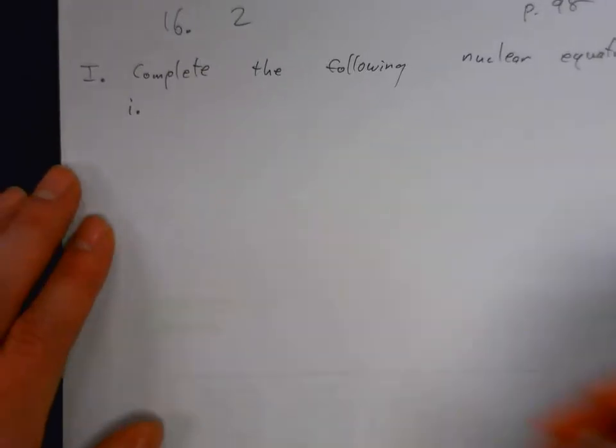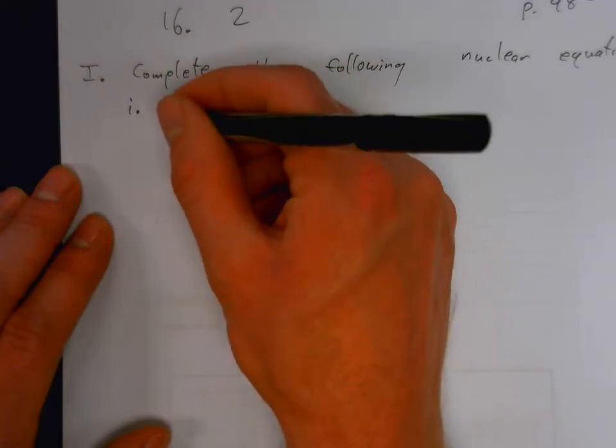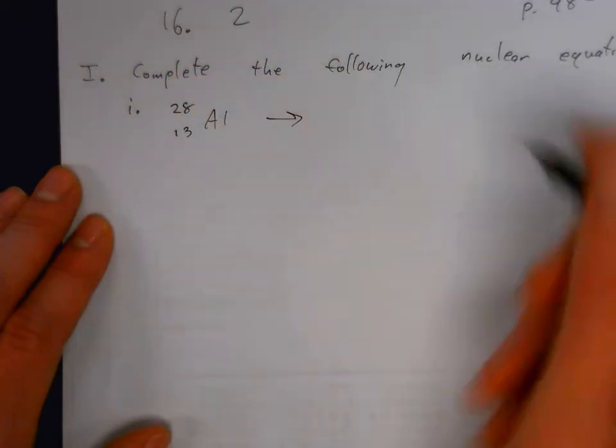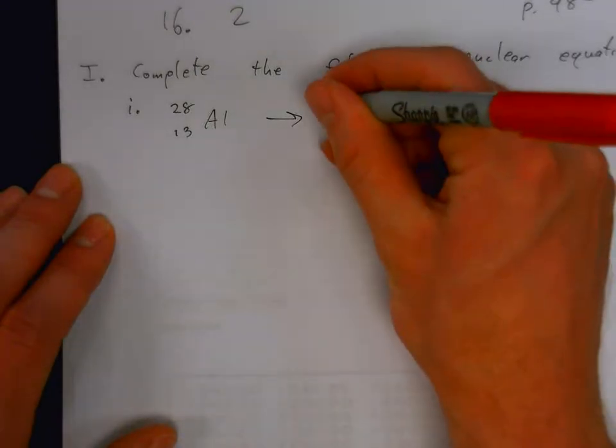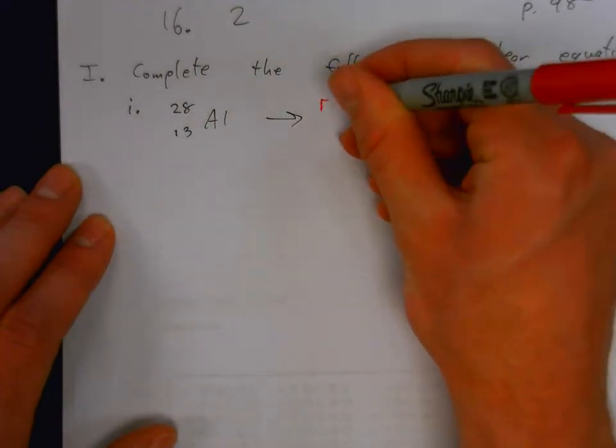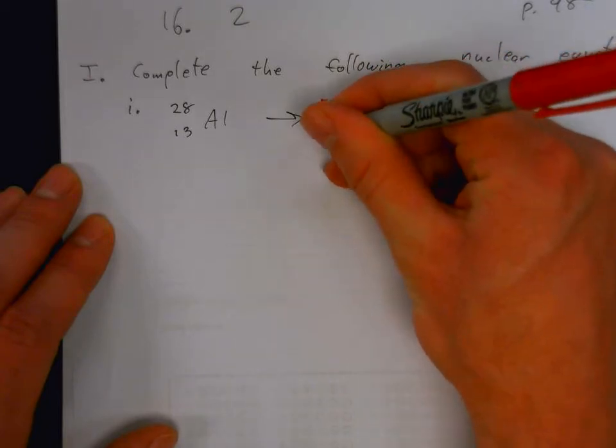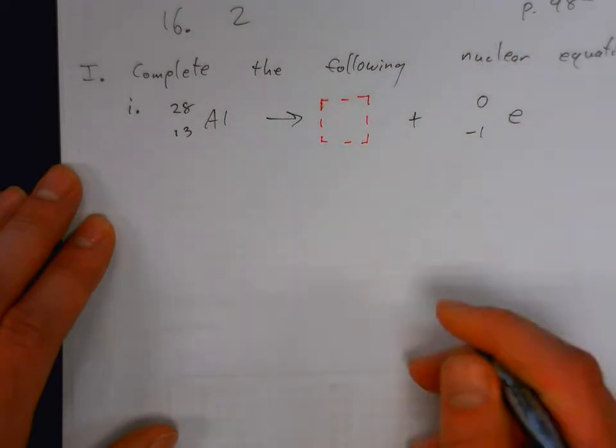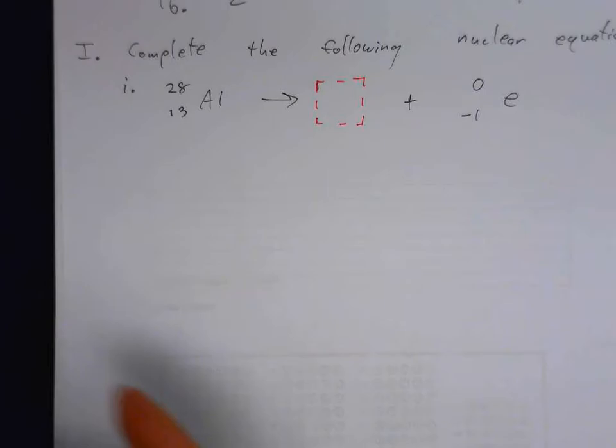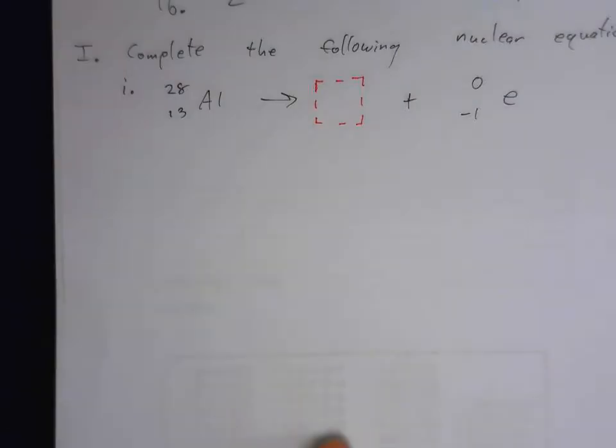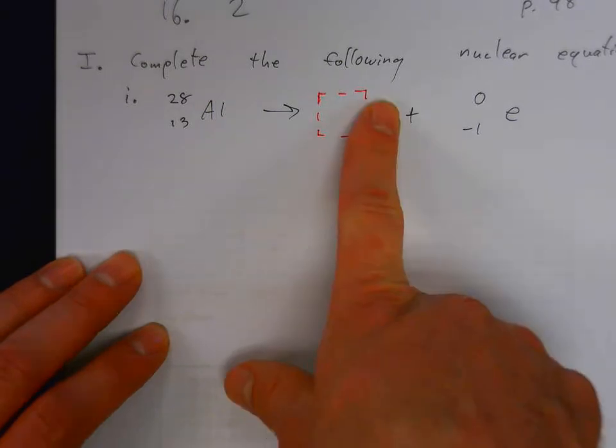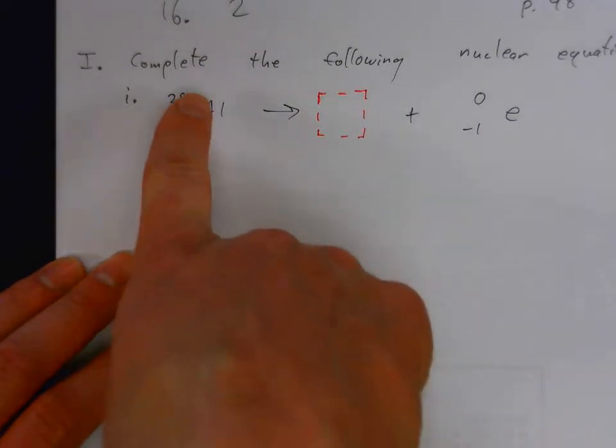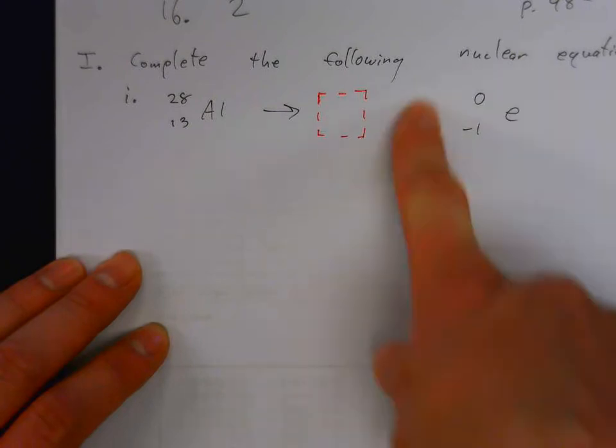For our first example, particle 28 over 13 aluminum decays to make an unknown plus zero over negative one e, which is an electron. We need to find the unknown particle that gets produced when aluminum decays by beta emission.